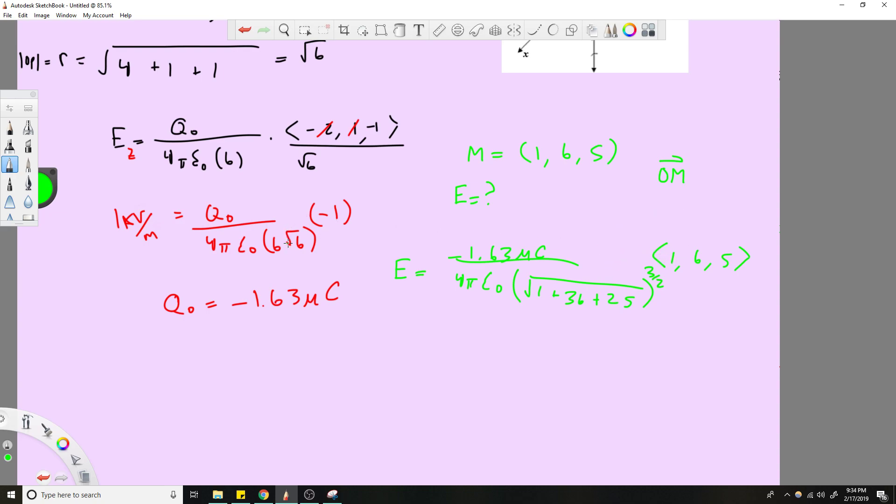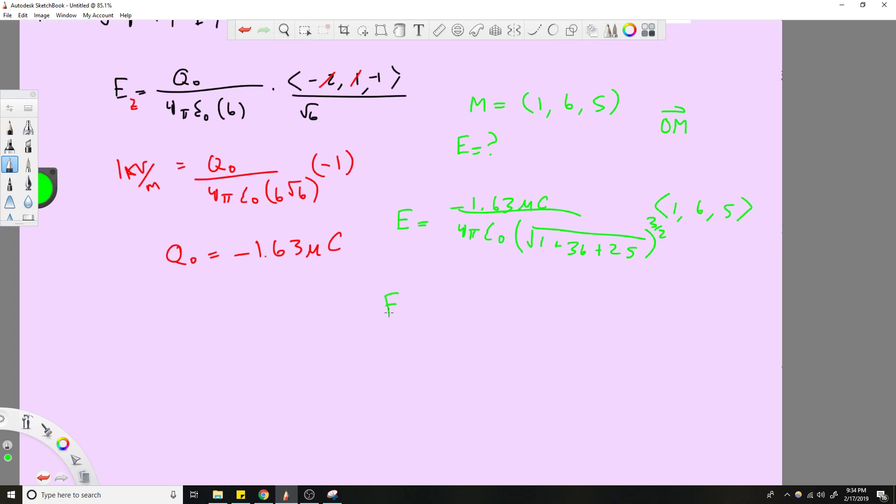And just like we did before, you see how this is to the 3 halves. It's kind of like 6 to the 3 halves. That's what we have here, this R value to the 3 halves. And you'd solve that, and you'd get some value. But this time, instead of it being like a scalar value here, you'd have a vector value of the electric field. And it'd have some value of x, y, z.